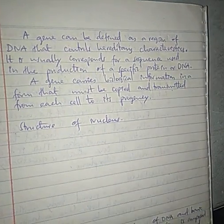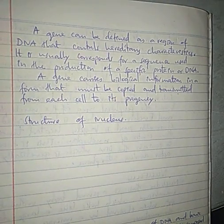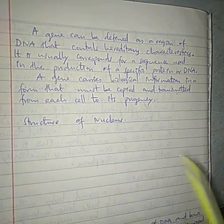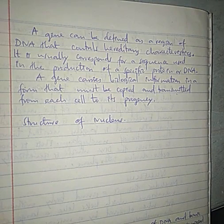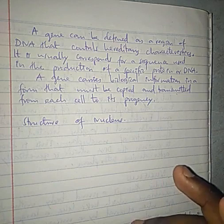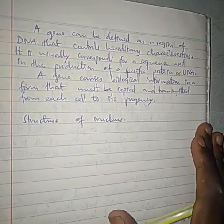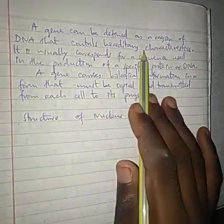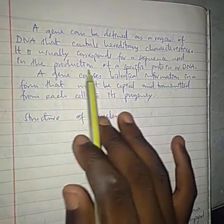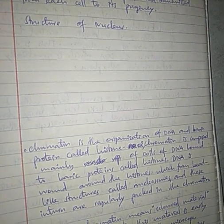A gene can be defined as a region of DNA that controls internal characteristics. In the cell, the very long DNA is coiled, and a piece of DNA can determine certain characteristics — such as hair color, skin color, hair texture, or whether you are tall or short. All of those characteristics are determined by pieces of DNA called genes. A gene usually corresponds to a sequence used in the production of a specific protein, and it carries biological information that must be copied and transmitted from each cell to its progeny.